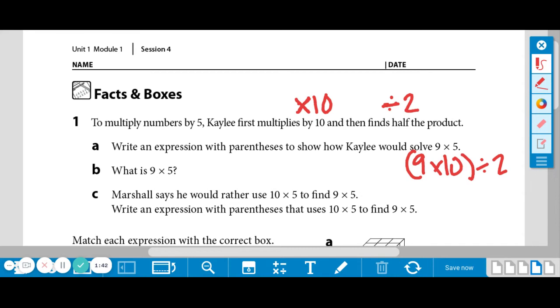The next question is, what is 9 times 5? You could solve this two ways. We could know our math facts, 9 times 5, or we could solve it using Kaylee's expression. So 9 times 10 is 90, and we could half that to get 45. On this one, just knowing the math facts probably would have been best, but that's okay.